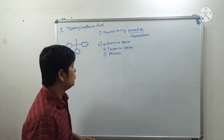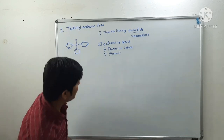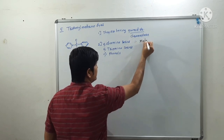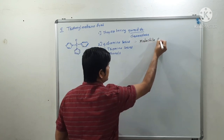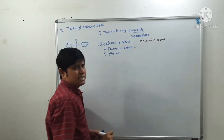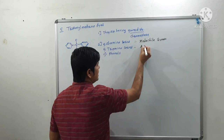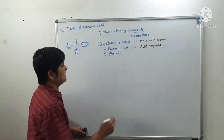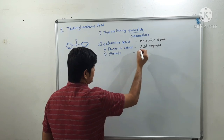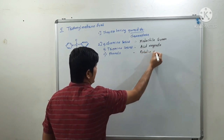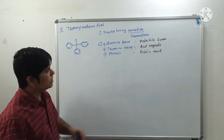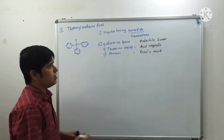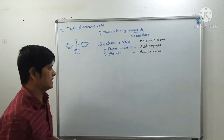Examples of these categories: the diamine series has malachite green as its example. The triamine dyes have acid magenta as an example. The phenol series has rosolic acid as an example. We will now see the structures of malachite green, acid magenta, and rosolic acid.